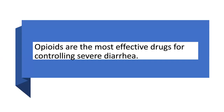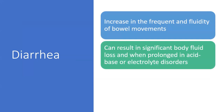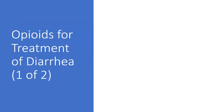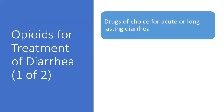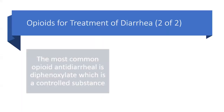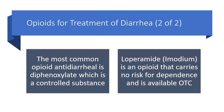Opioids are the most effective drugs for controlling severe diarrhea. Diarrhea is the increase in frequency and fluidity of bowel movements; it can result in significant body fluid loss and, when prolonged, in acid-base or electrolyte disorders. It is a symptom of an underlying disorder — removing that cause will resolve the diarrhea. The most common opioid anti-diarrheal is diphenoxylate, which is a controlled substance. Loperamide (Imodium) is an opioid that carries no risk for dependence and is available OTC.